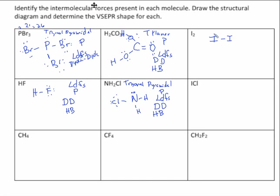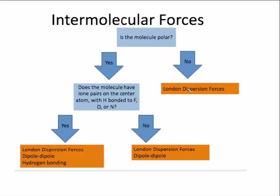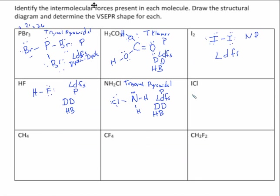I2: if you draw it, you end up with a linear molecule where the atoms are the same, so it is non-polar. Non-polar molecules only have London dispersion forces — that's it. ICl: because iodine and chlorine have a difference in electronegativity (chlorine is more electronegative), it's a polar molecule. Everything has London dispersion forces; because it's polar, it has dipole-dipole. Can it hydrogen bond? Of course not — there's no hydrogen in it.